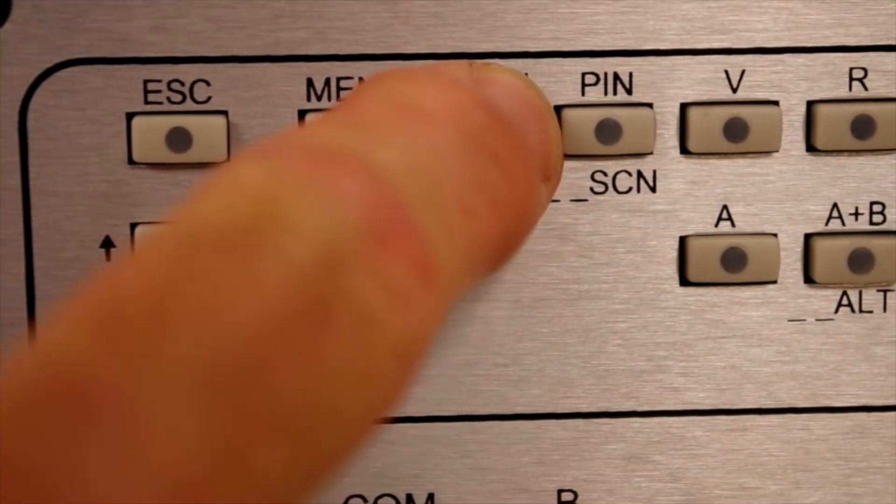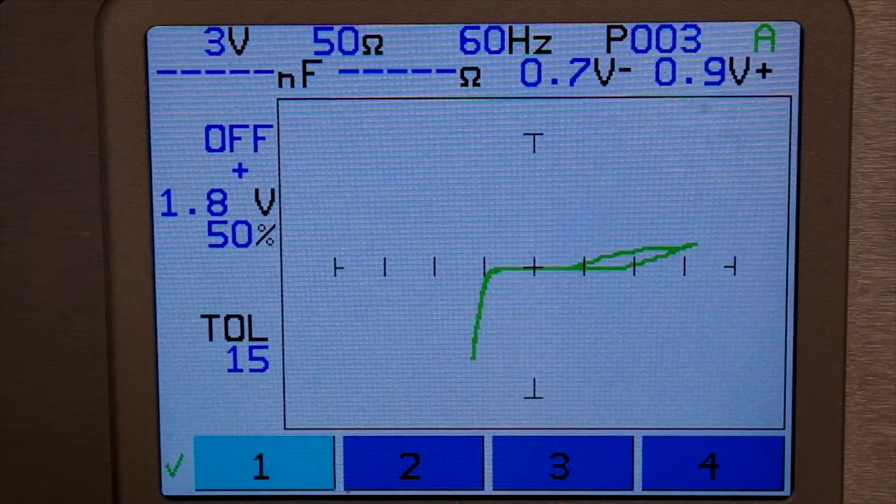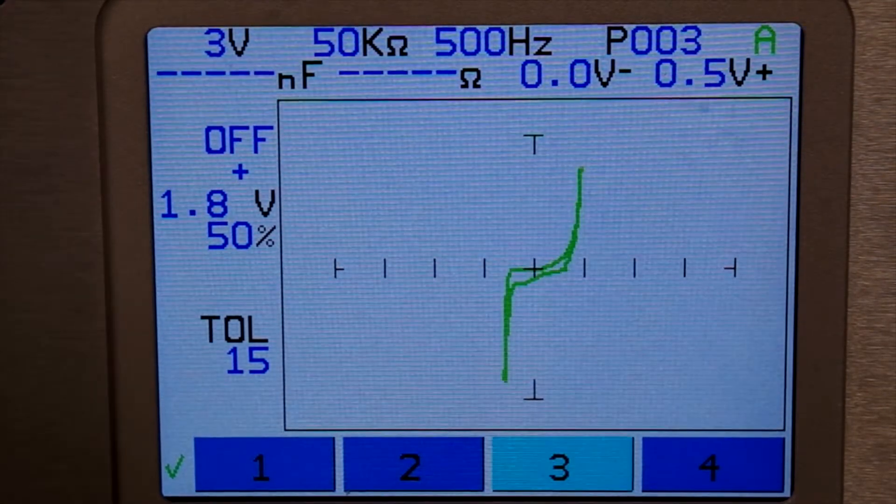By simply pressing the Scan Pin button, the tracker will step through each pin in the four preset ranges and display the channel A versus channel B signatures on the LCD.